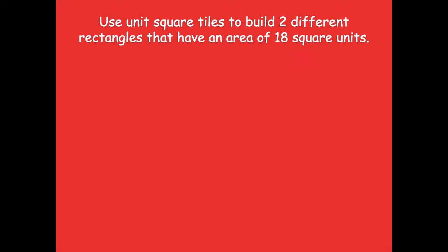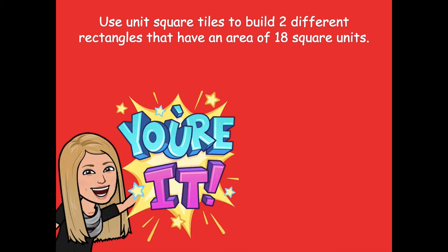You're going to use unit square tiles to build two different rectangles that have an area of 18 square units. They can look different, but both must have an area of 18 square units. Remember, area is just length times width. Pause the video, come up with at least two different rectangles — more than two is fine — then click play when you're ready.